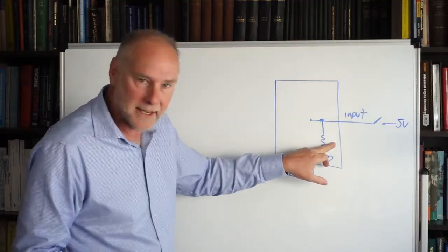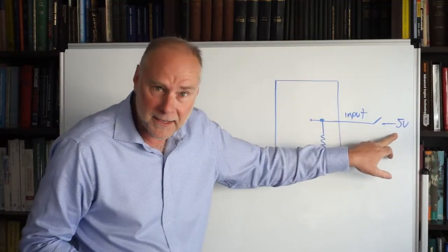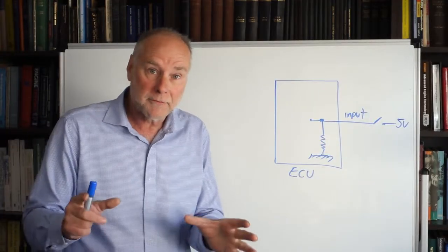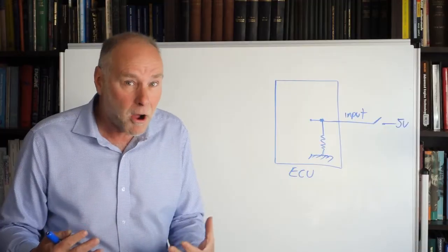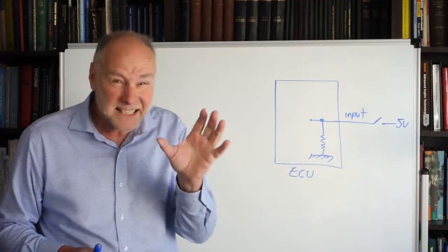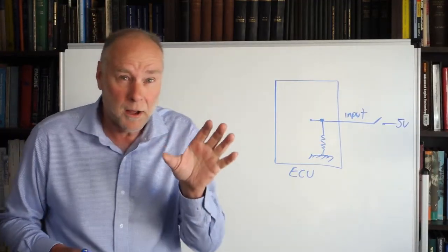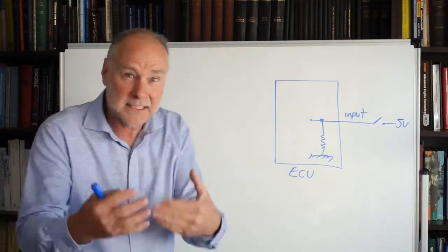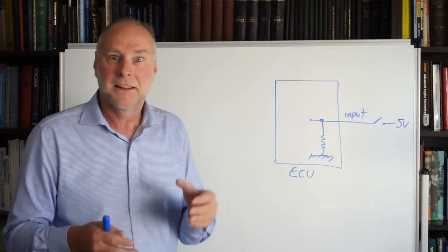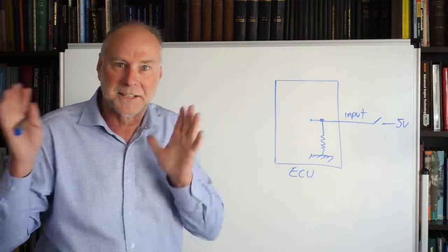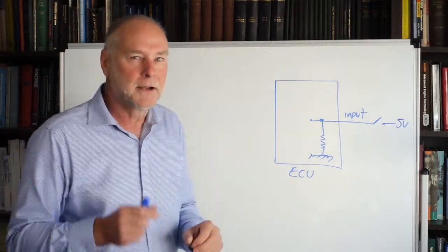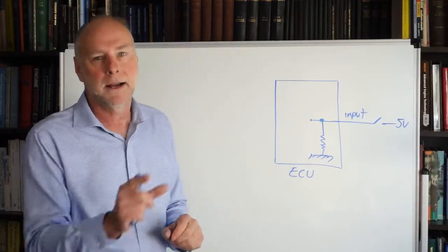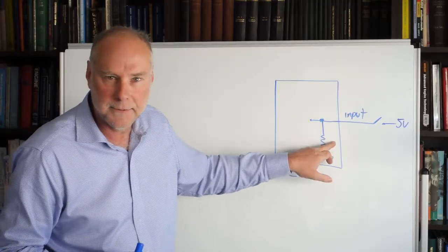So whether you select a pull-down or pull-up depends on whether you're feeding in a voltage or whether you're connecting it to ground. Pull-up and pull-down resistors, they're interesting things to keep in mind. For example, if you're adding an interceptor and you're wanting to connect to a coolant temperature sensor or something like that, and the interceptor has got a pull-up in it, then you end up with two pull-ups. You have the resistors fighting each other.